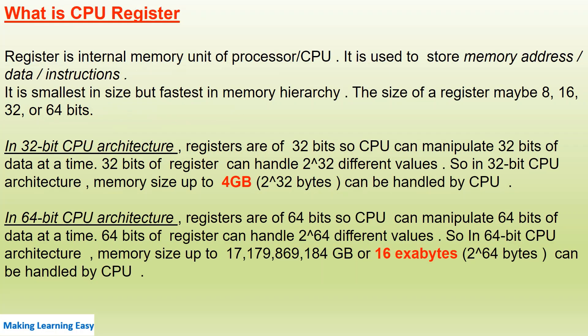First, what is a CPU register? A register is an internal memory unit of the CPU. It is used to store memory addresses, data, or code instructions. It is the smallest in size but fastest in the memory hierarchy. The size of a register may be 8-bit, 16-bit, 32-bit, or 64-bit, depending on the architecture of the processor.